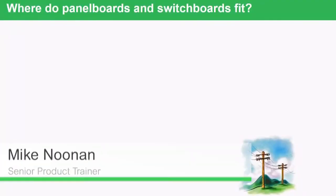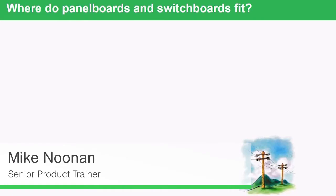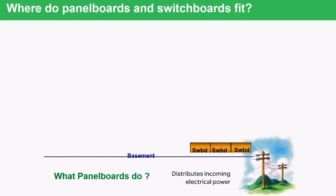To look at where a switchboard fits compared to other products in the distribution world, we'll take a look at a building. The switchboard is usually the terminating point of the utility conductors. The larger the facility, the larger the switchboard, and it is more likely that a large facility would have a switchboard as the main point of entry for the service entrance.